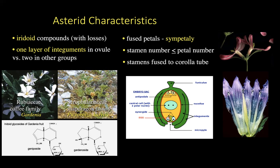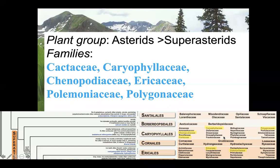There are some interesting secondary compounds we're going to talk about. One shared between all asterids are iridoids. This is showing two different groups of asterids — the Rubiaceae, the coffee family, and Scrophularia, or the snapdragon family — with very specific iridoids, secondary compounds to prevent herbivory by insects. In general, the asterids have only one layer of integuments. Angiosperms ancestrally have two layers around each ovule; we will see one layer lost in most asterids. The big defining features are reduction in stamen number and fused petals.